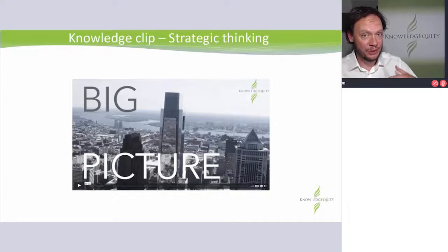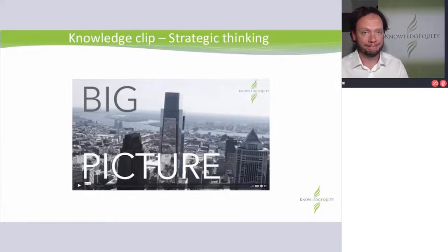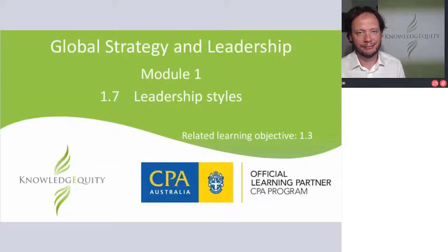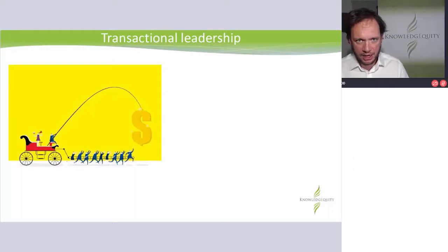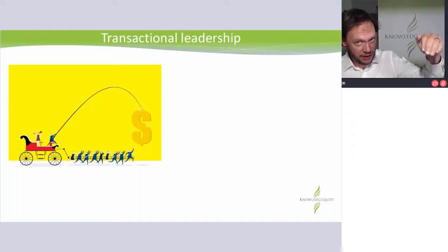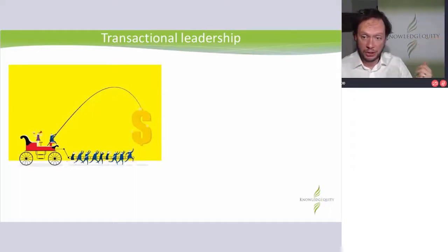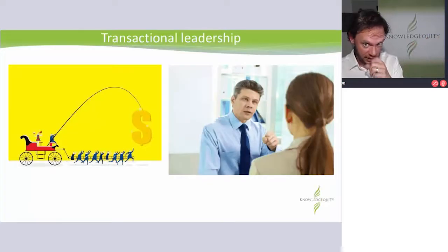Now we need to move on to the next part of leadership around styles. Section 1.7 is leadership styles, related to learning objective 1.3. Start with the two main ones. Transactional — pretty straightforward. I dangle the reward, or unfortunately, I give you the stick.